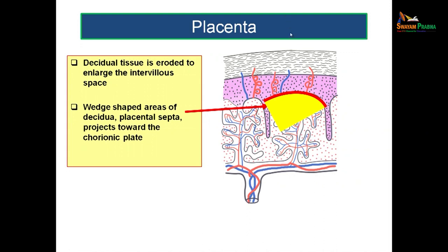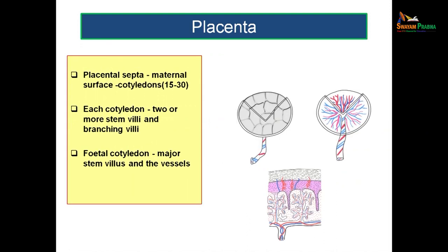The region between two placental septa is called a cotyledon, visible from the maternal surface when the placenta detaches. When you look at the maternal side, the cotyledons appear as different polygons due to the placental septa. There are roughly 15 to 30 cotyledons, and each cotyledon contains two or more stem villi with their branching villi.